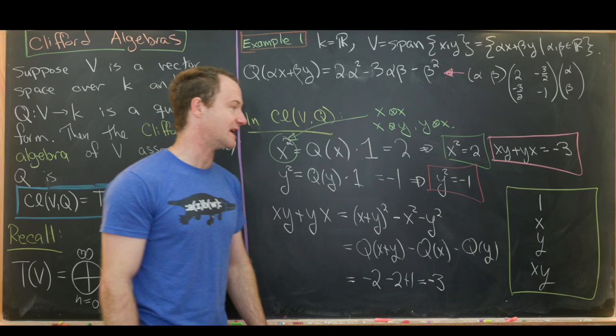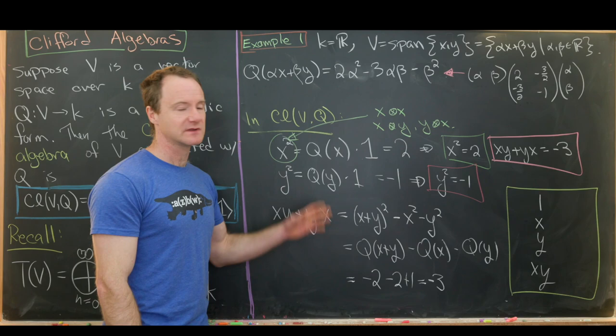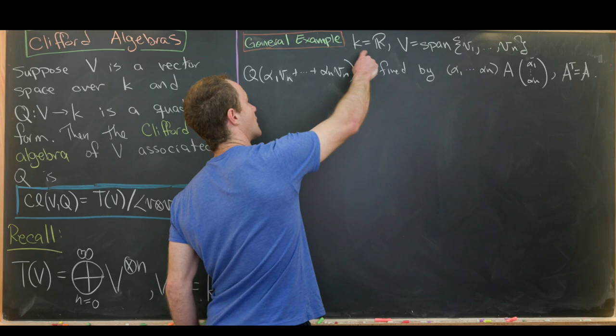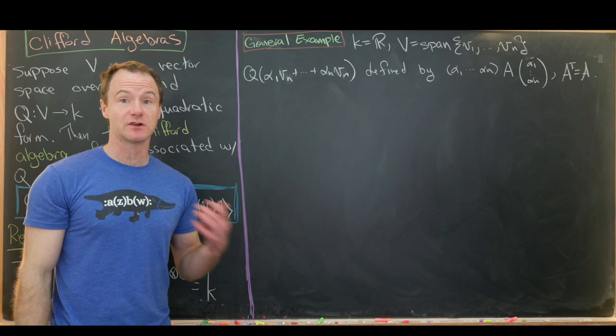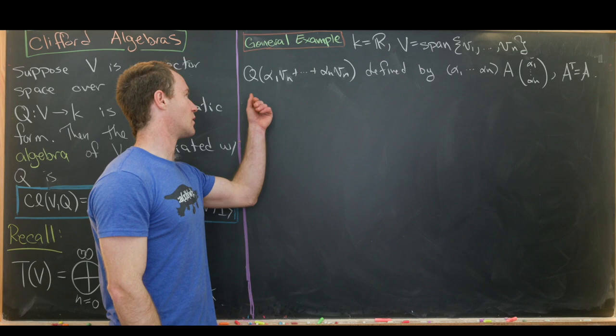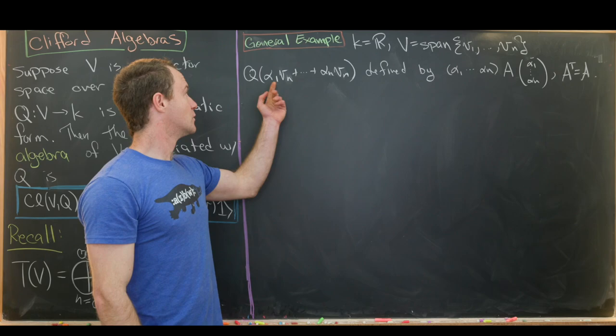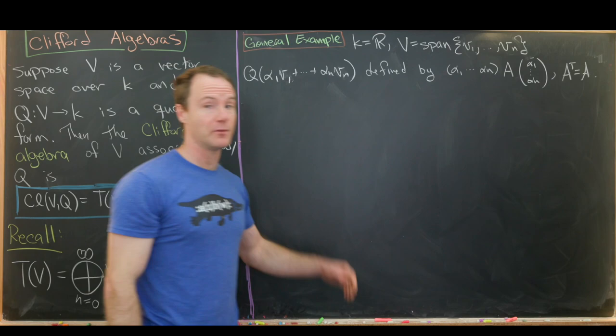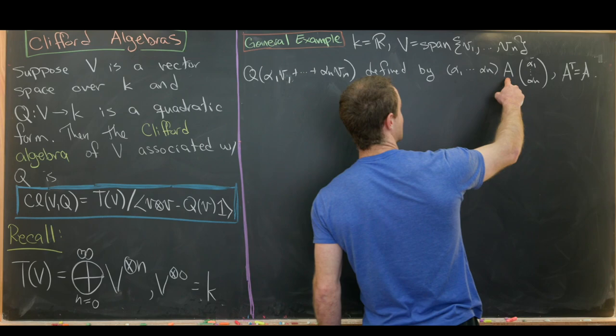Now that we've looked at a couple of simple examples, let's dive into more generalities. We'll still take the ground field to be ℝ, but now we'll have an n-dimensional vector space V, spanned by vectors v₁ up to vₙ. We're going to be a little bit more general about how we define our quadratic form.